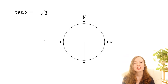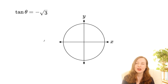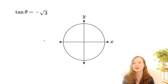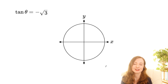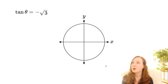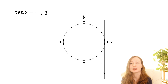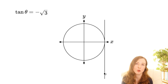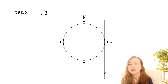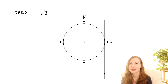Let's do one with tan. For tan theta equals negative root 3, you can visualize it by extending the line of whatever angle you have until it hits the line x equals 1, and then the y-coordinate at that intersection gives you the tan. So what we do to visualize that equation is draw in that vertical line and go down to negative root 3 — it's about 1.7, so its magnitude is bigger than 1. Then we draw a line that passes through this point and through the origin.